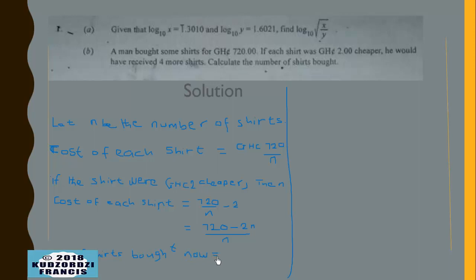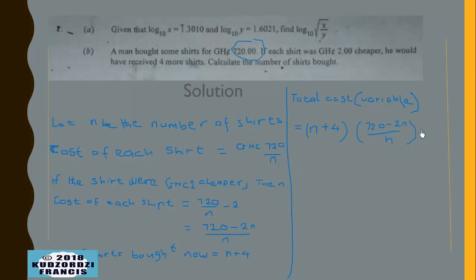The new number of shirts bought would increase by four, so we have n plus 4. The total cost equals the number bought, n plus 4, times the cost of each shirt, which is 720 minus 2n over n, and this should equal 720 cedis. Cross-multiplying gives: n plus 4 into 720 minus 2n equals 720n.